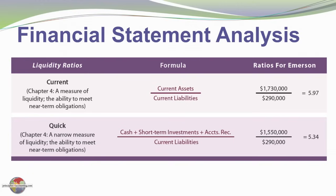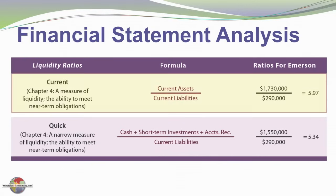I've identified two liquidity ratios. Liquidity refers to a company's cash or near-to-cash position — its ability to meet obligations as they come due. In Chapter 4, we saw the current ratio, which is current assets divided by current liabilities. On the far right are some calculations of the current ratio for Emerson Corporation. You might want to open your textbook and find the amounts for current assets and current liabilities to come up with that ratio.